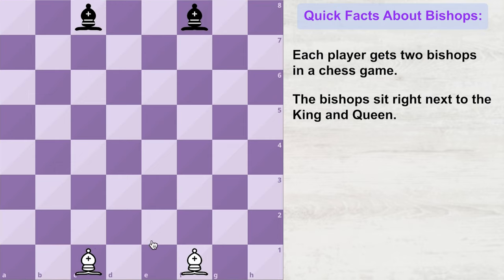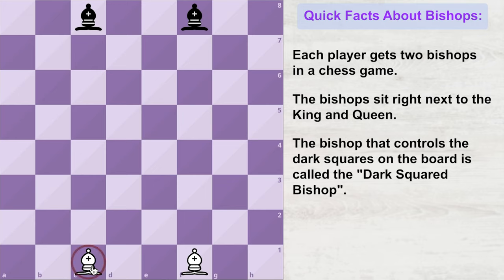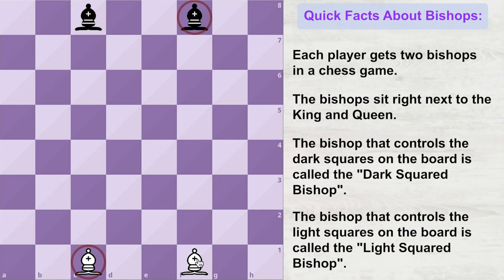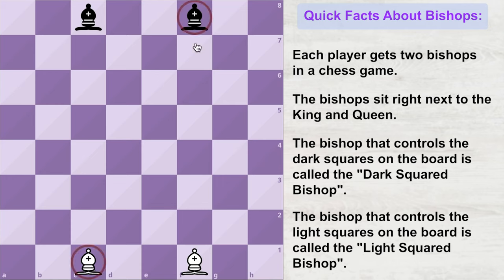While both bishops move and capture in the same way, the only difference is that one bishop is always sitting on the dark squares and the other is always sitting on the light squares. That is why both bishops have different names — the one on the dark squares is called the dark squared bishop, and the one on the light squares is called the light squared bishop.